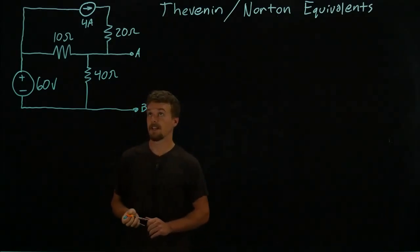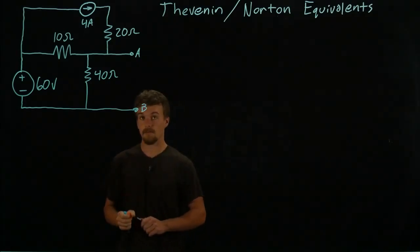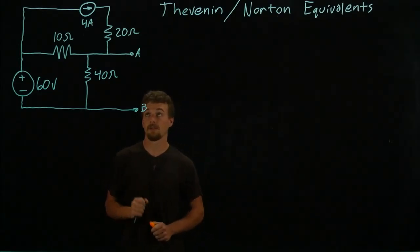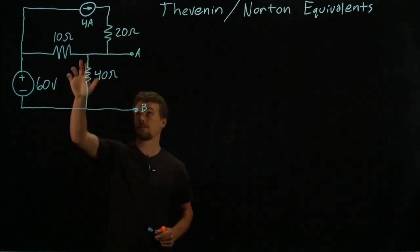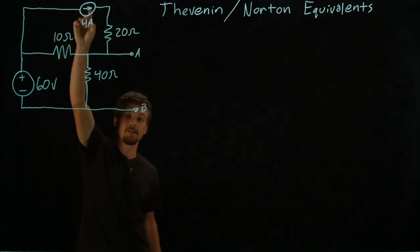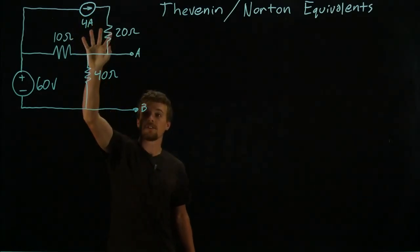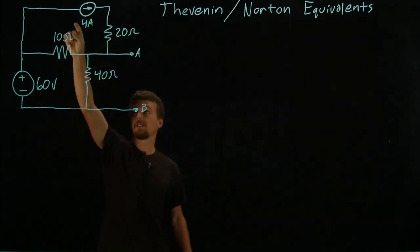Now when we say we set sources to zero, zero current, zero amps, no current corresponds to having an open circuit. So we would take this current source and pull it out and leave the wire cut.